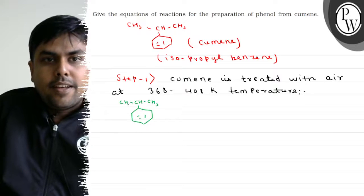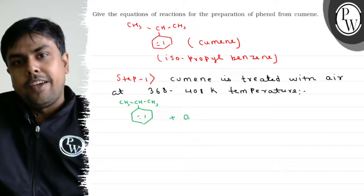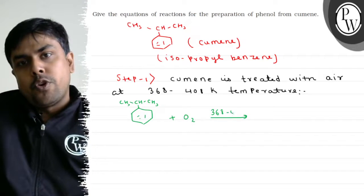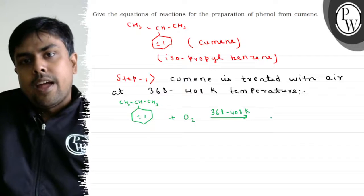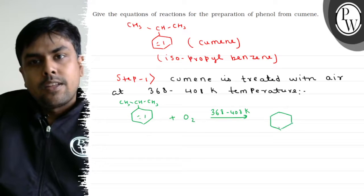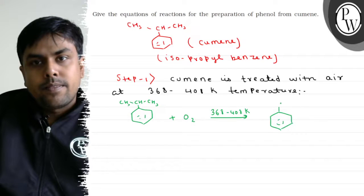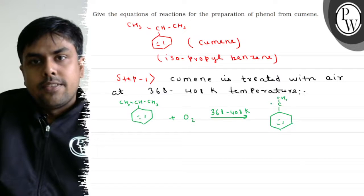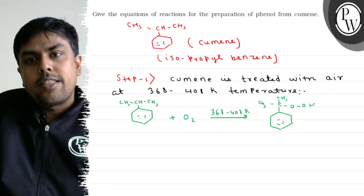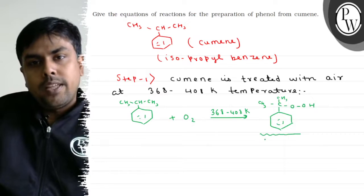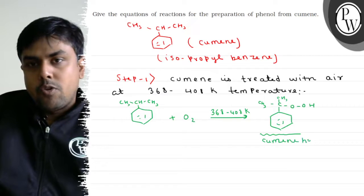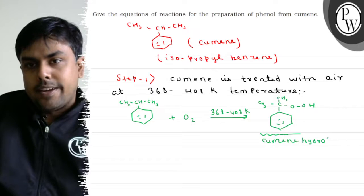When cumene is treated with air at 368 to 408 Kelvin, the intermediate formed is cumene hydroperoxide. The structure of cumene hydroperoxide has a benzene ring with a C(CH₃)₂–O–O–H group.